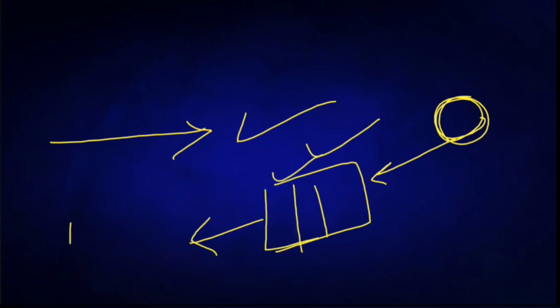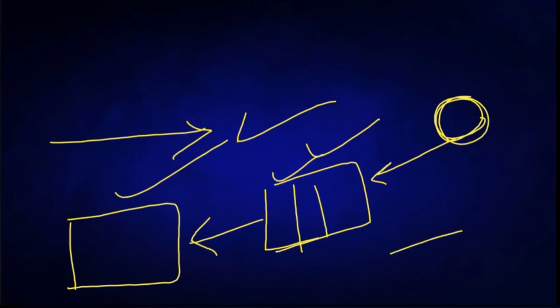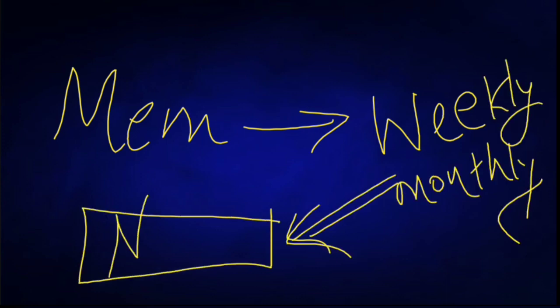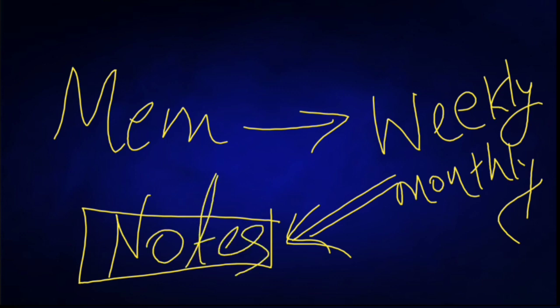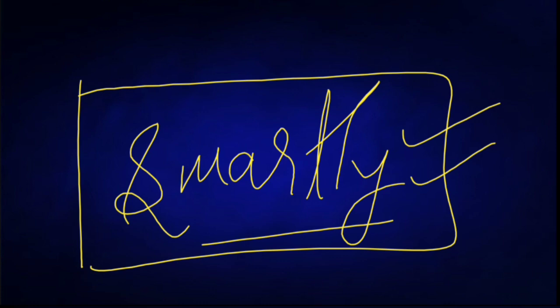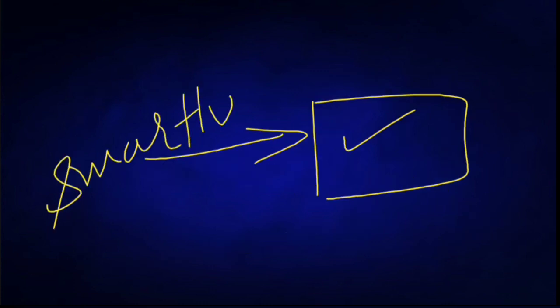When the exam is near, you should revise the last three months' Affairs Cloud PDFs. Reading six full months would be very lengthy, so make sure you cover at least the latest three months. I also made a video showing how you can cover one week of current affairs in less than 30 minutes using smart notes. That video is a must-watch. If you are short on time before exams like SSC CGL or CPO, you can use that technique.